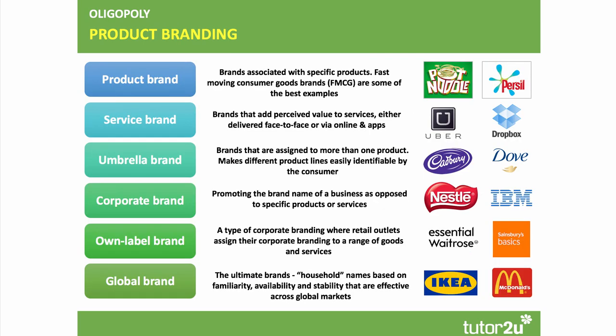Product branding is absolutely essential to understanding game-theoretic behaviour in markets. Firms spend huge amounts on branding because if they don't and rivals do, they lose market share. This ranges from generic product brands associated with a specific product such as pot noodles, through to service brands, umbrella brands, own-label brands, and truly global brands like IKEA and McDonald's.